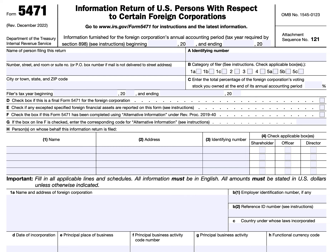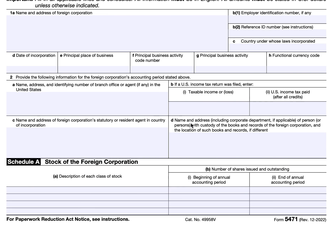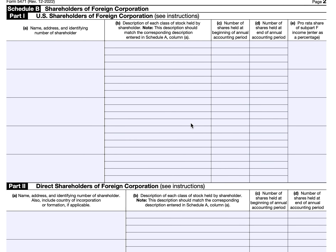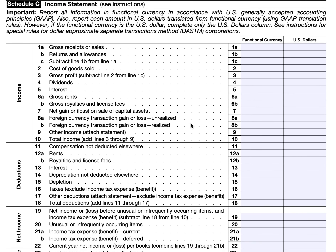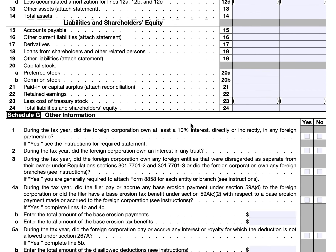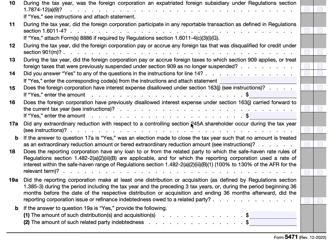The more important thing probably has to do with category of filers. If you see Item B up at the top right-hand corner, you'll see category of filer. A lot of this information will be pretty straightforward once you understand the category that you're in and what information you need to report. This is a six-page form with lots of schedules, so it's important to pay particular attention to the category of filer that suits your specific situation.